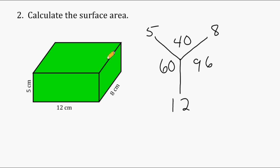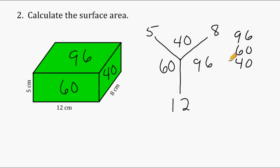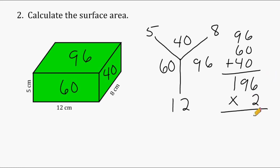Looking at the three surfaces, the largest has an area of 96, another has an area of 60, and the third has an area of 40. If we add these three numbers together, we end up getting half of our surface area — 196 square centimeters represents only half. So we have to double this to get our final answer, which is 392 square centimeters.